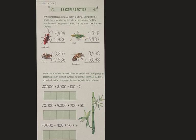Okay, at the bottom of that column, it says write the numbers shown in their expanded form using zeros as placeholders. In the first number, notice that there are no tens, so write zero in the tens place. Remember to include commas. So you're going to take the expanded form and you're going to write it in standard form, the way you normally see a number written. Okay, go ahead and do those now. Pause your video.